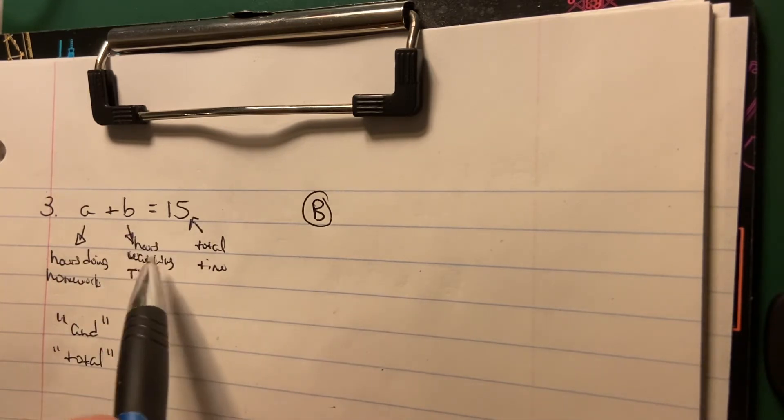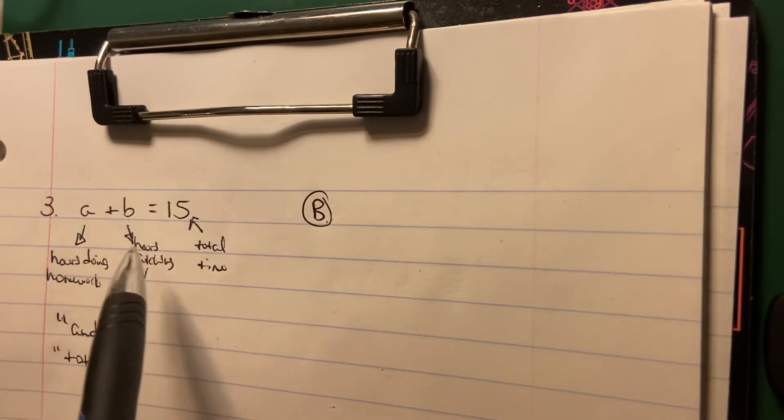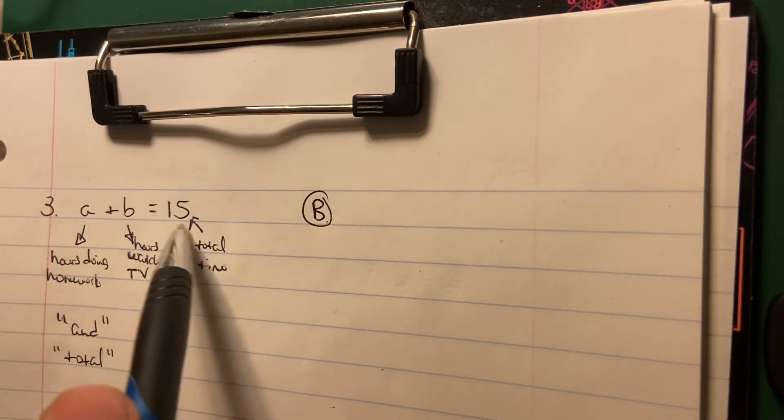Now, the only thing that B could represent would be hours spent watching TV. So that would be answer choice B, because the question talks about the student spending a certain amount of hours doing homework and also spending a certain amount of hours watching TV for a total of 15 hours.